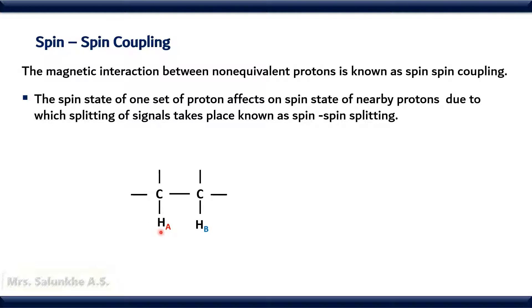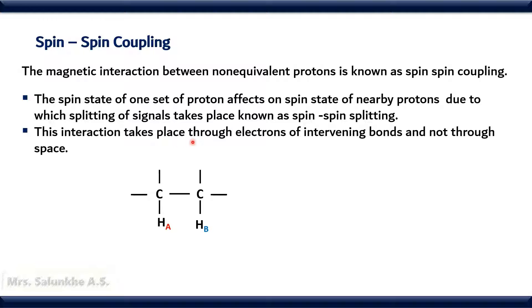Consider this molecule. Suppose HA and HB are the non-equivalent protons. The spin state of nucleus of proton A affects the spin state of proton B. The magnetic interaction takes place through electrons of intervening bonds, and that magnetic interaction is known as spin-spin coupling. This interaction takes place through electrons of intervening bonds and not through space.